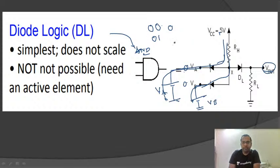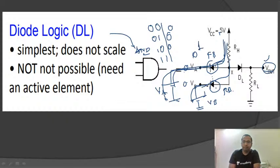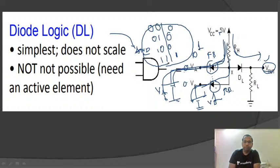For zero-one input, one diode is forward biased and one is reverse biased; the current flows through the forward-biased diode and we again get output as zero. Similarly for one-zero, the output is zero. Only when both inputs are one do both diodes come into reverse bias, and since V-out is connected to plus five volts, the output becomes high. This gives us the truth table of the AND gate.